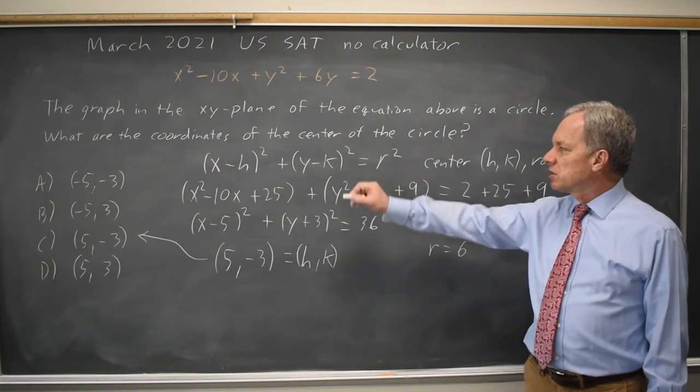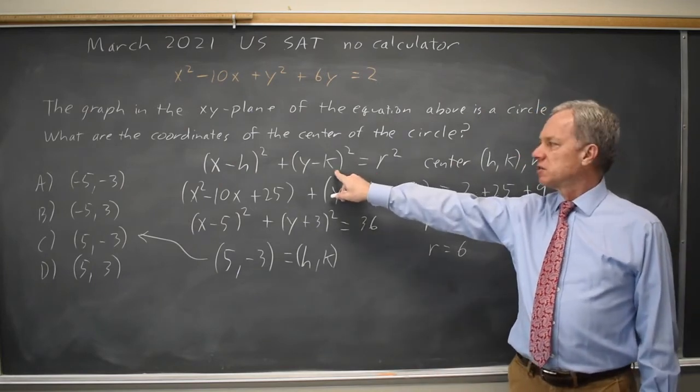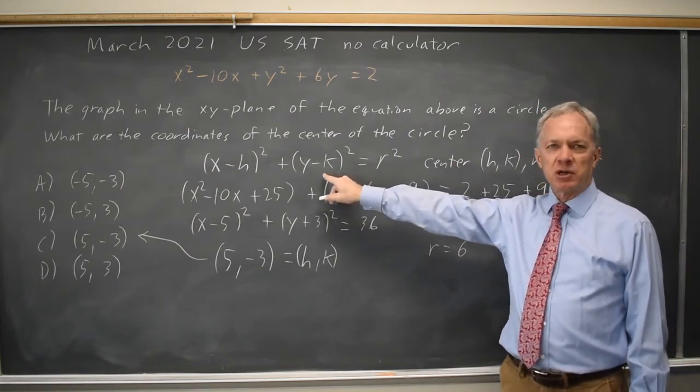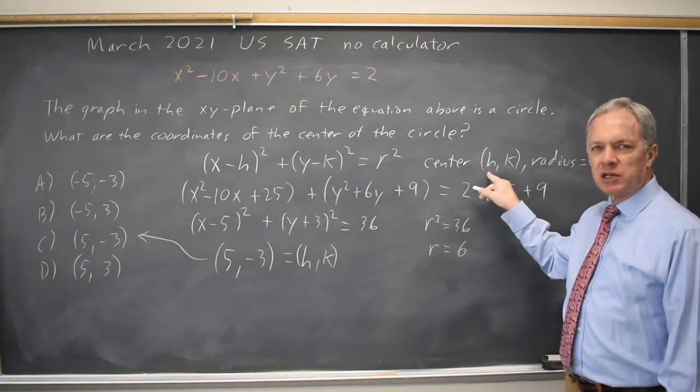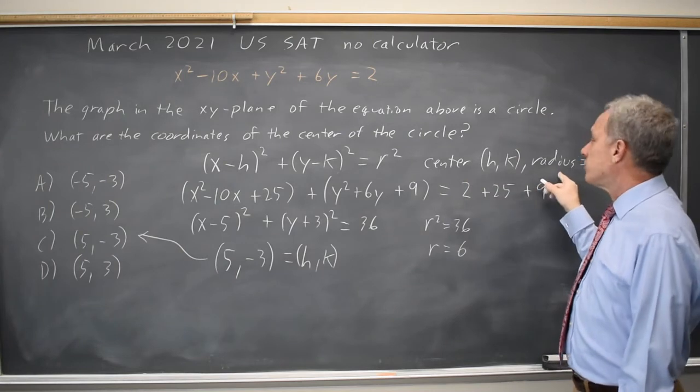It is important to know the standard equation of the circle: (x - h)² + (y - k)² = r² gives you center positive h, positive k with radius r.